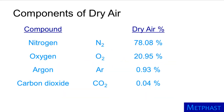Dry air — air without any water vapor in it — is composed of about 78% nitrogen, 21% oxygen, and 1% the noble gas argon. Carbon dioxide comprises about 0.04% of the atmosphere, or 400 parts per million, and its concentration is rising due to emissions from human activities. No other gas is present in uncontaminated dry air at a concentration greater than 100 parts per million, or 0.01%. The composition of dry air is fairly uniform throughout Earth's atmosphere.